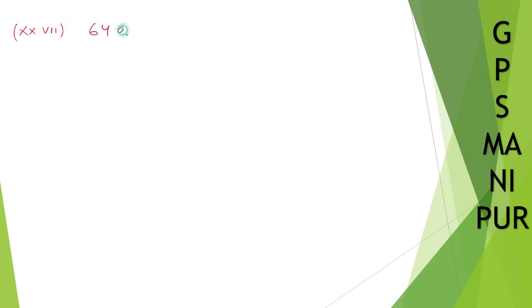Now let us do the next question. Next question is roman number 27. So we have 64A cubed minus 8B cubed.